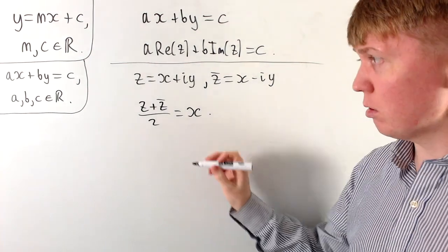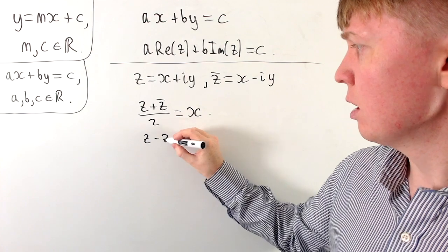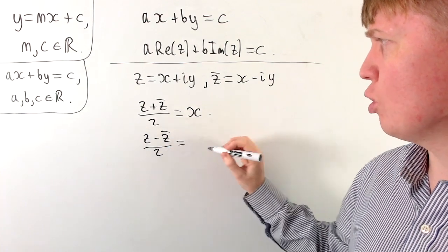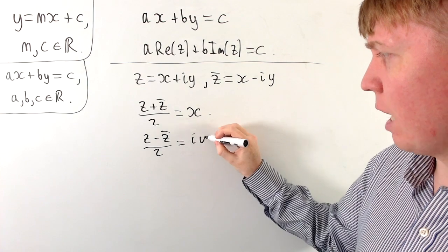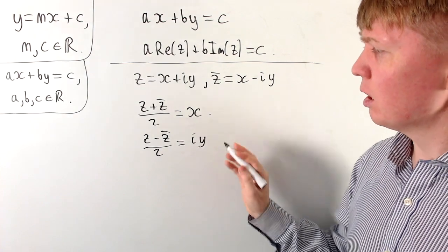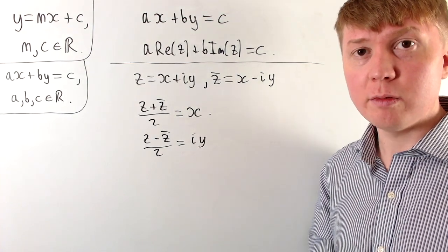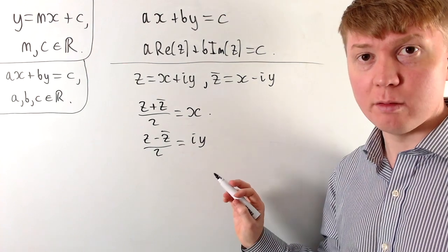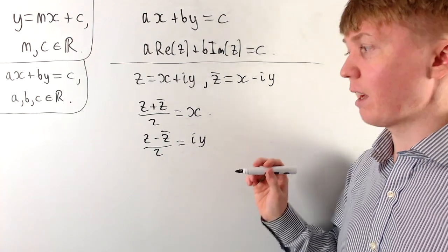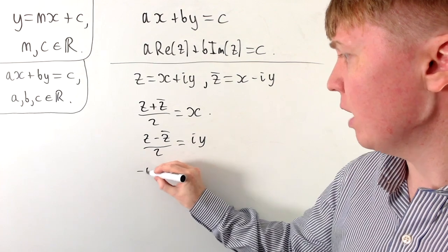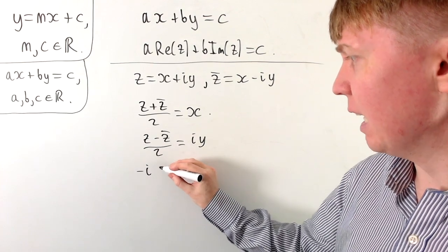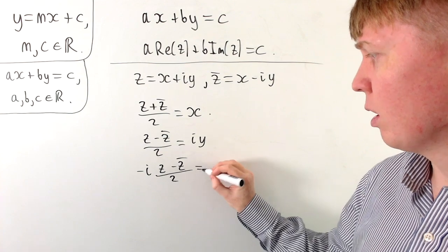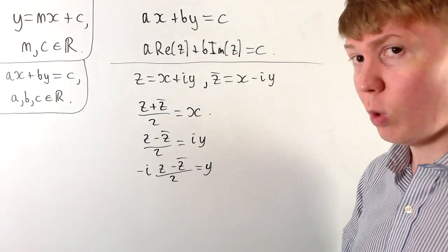Similarly, if we do z minus its conjugate, the x terms cancel, and dividing by two gives us i times y. To get y on its own, we multiply by negative i, so negative i times (z minus z̄) divided by two gives us y.